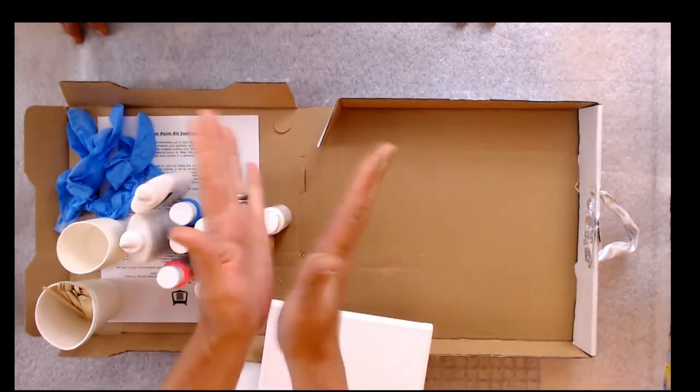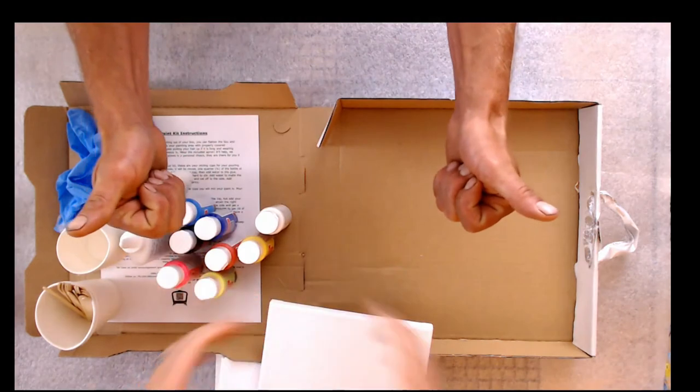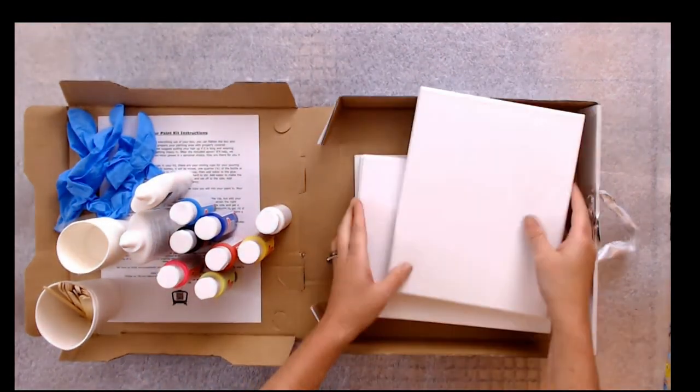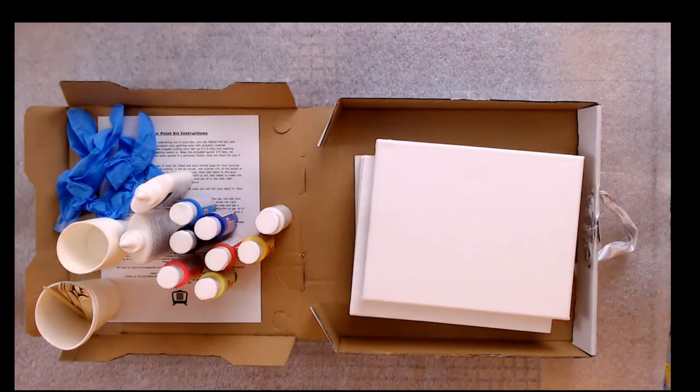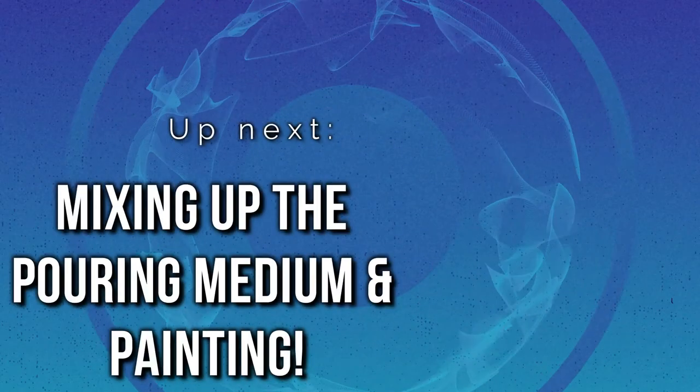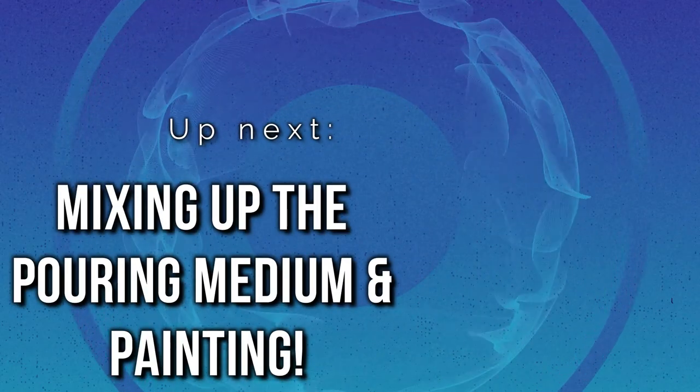Now listen, your tray is going to be where you pour your paint. So there you go, you've got plastic, you've got paper, you've got it all right there. Let's paint. Finally, let's get to the mixing and the painting.